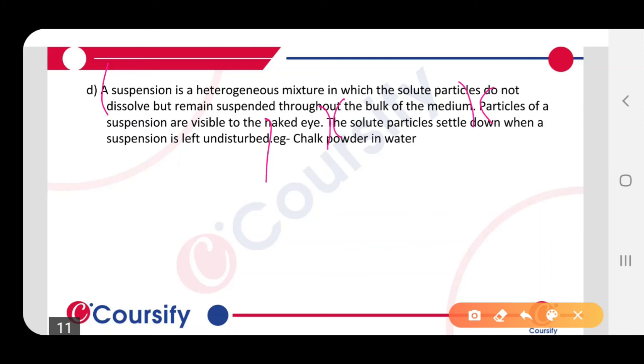Colloid me hamne padha ki, joh solid particles hoote hai, agar hum unhe disturb nah bhi karay, toh bhi woh settle down nahhi hoote kabhi. Lekin suspension me aisa nahhi hoota hai. Suspension me joh solid particles hoote hai, agar unhé hum, agar us mixture ko hum undisturbed chholde dhe, toh woh settle down ho jatay hai neeche. Toh suspension ka example, chalk powder in water. Agar aap chalk powder water me mila hai, toh aap dhekhenge ki, woh kuch samay baad settle down ho jayega. Agar woh pure, woh humare naked eye se visible bhi hoota hai. Agar woh pure solution ke medium me spread out bhi hoota hai, thik hai? Toh woh eek suspension ka example hai.